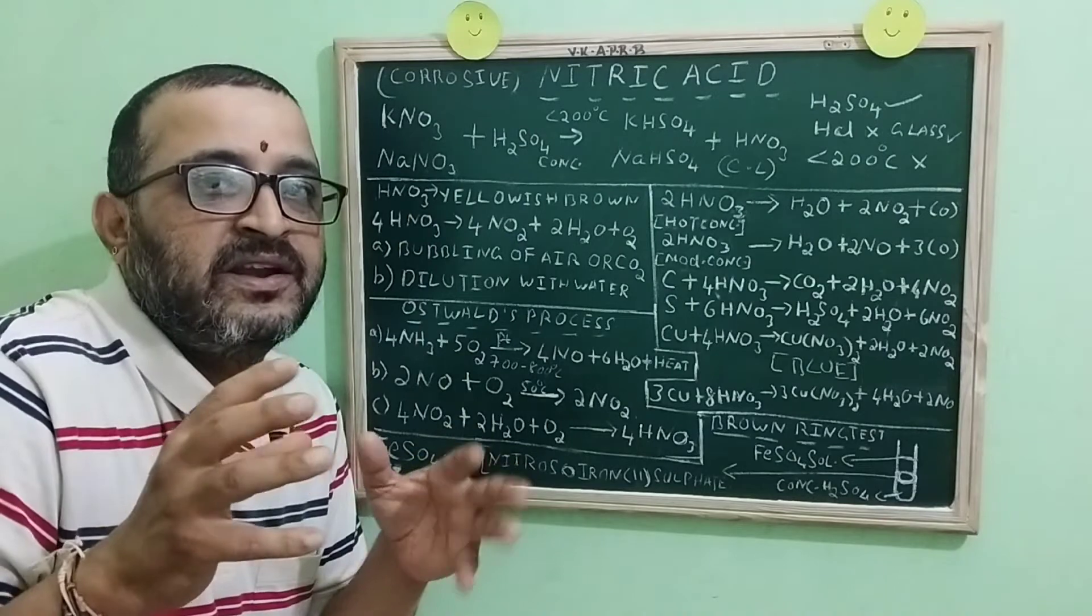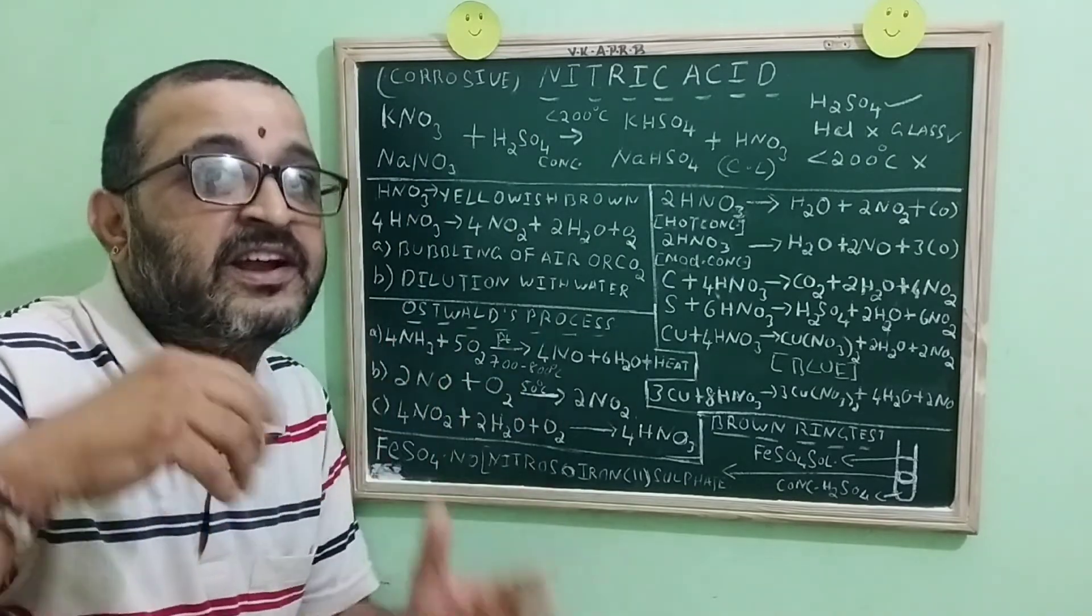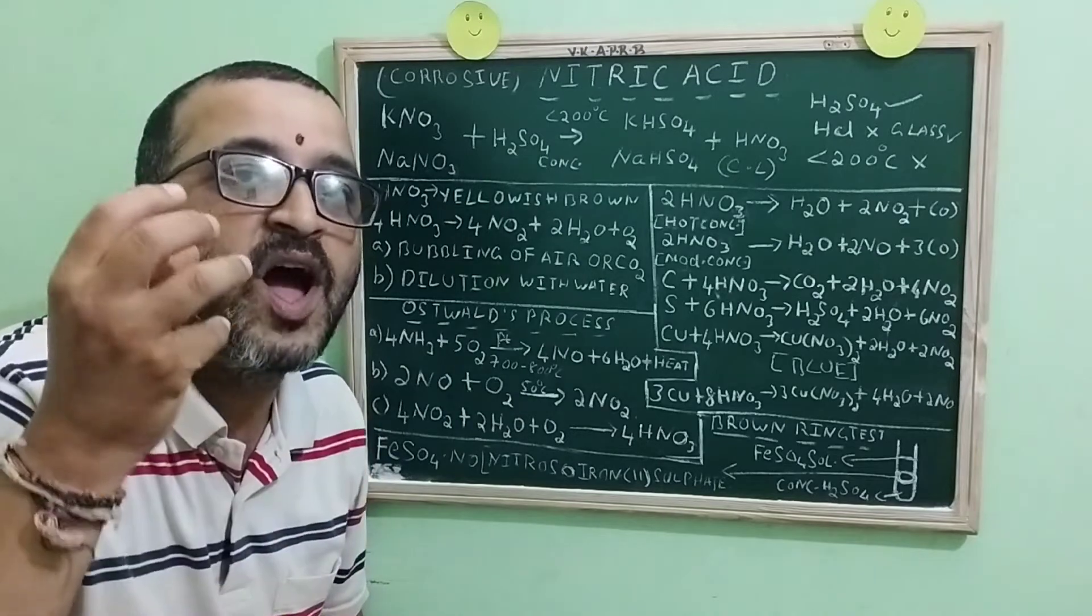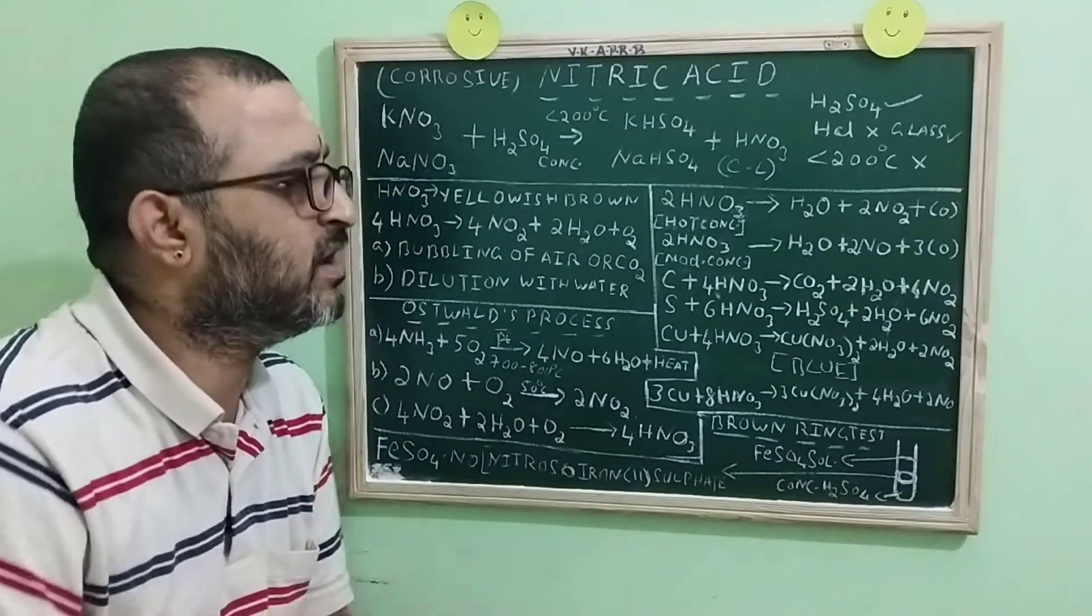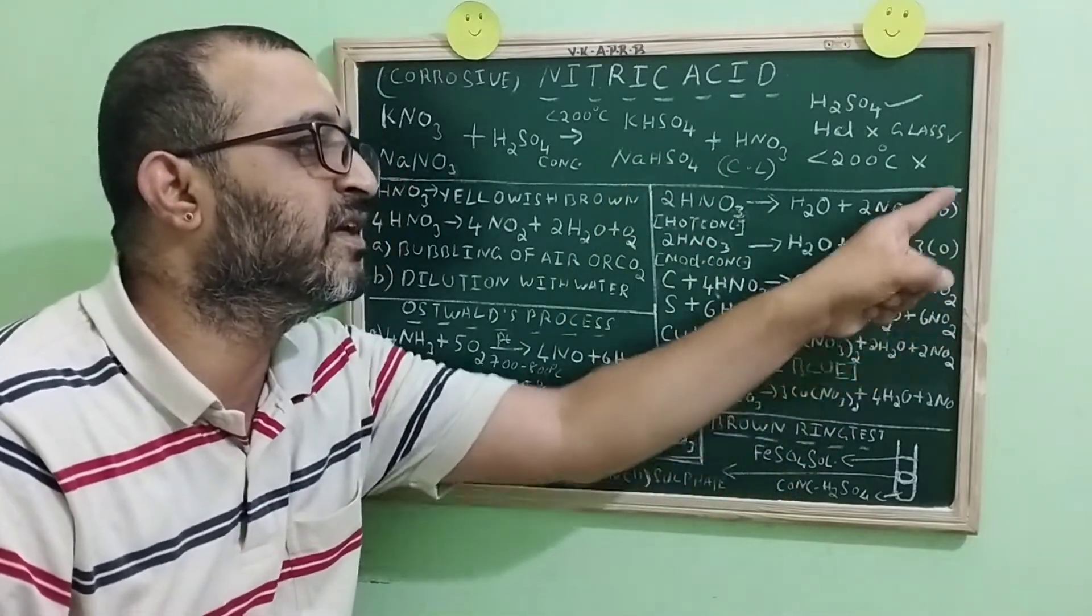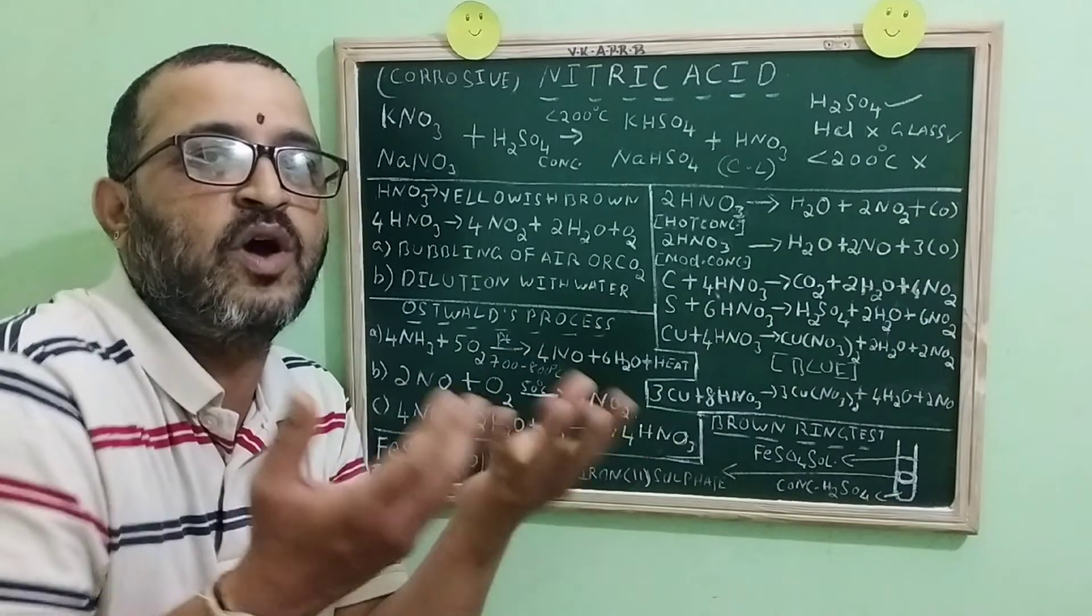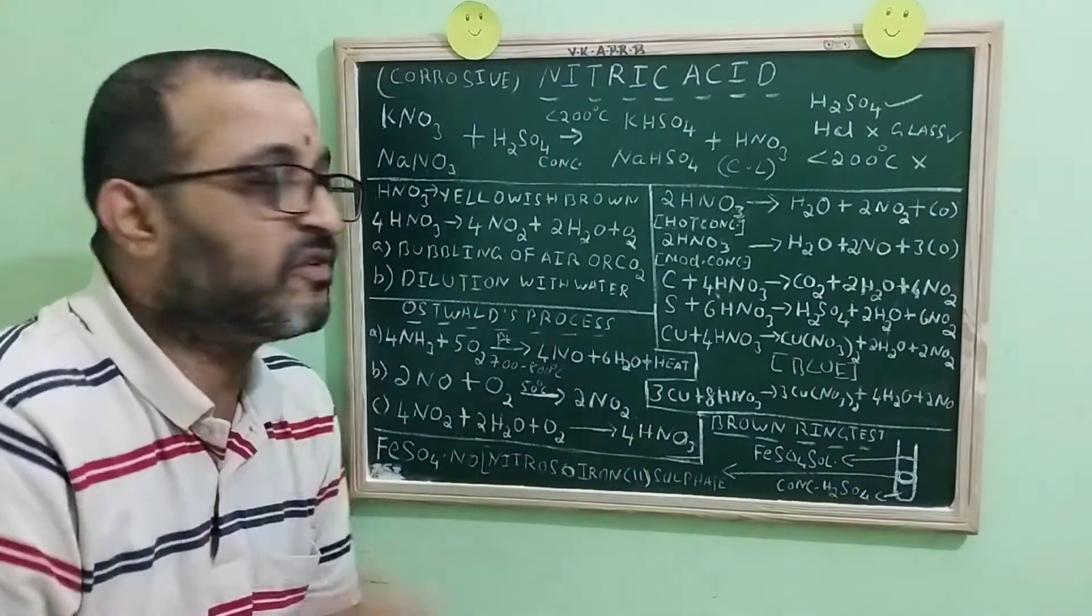We all know that not only is nitric acid a strong acid, it is also a very good oxidizing agent. How do you prove that it is an oxidizing agent? Definitely, decomposition of nitric acid will produce nascent oxygen. That nascent oxygen will oxidize metals, non-metals, organic compounds and inorganic compounds.